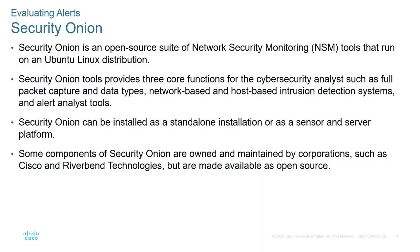The source of an alert really depends. We have Security Onion, which is basically an open source suite of security monitoring tools, typically referred to as a network security monitoring toolset that runs on a Ubuntu Linux distribution. Security Onion provides three core functions for analysts: full packet capture and data analysis, packet-based and host-based intrusion detection systems, and alert analysis tools. Security Onion can be installed as a standalone installation or as a sensor and server platform. The components are maintained by corporations such as Cisco and Riverbed, but the code itself is still classified as open source.